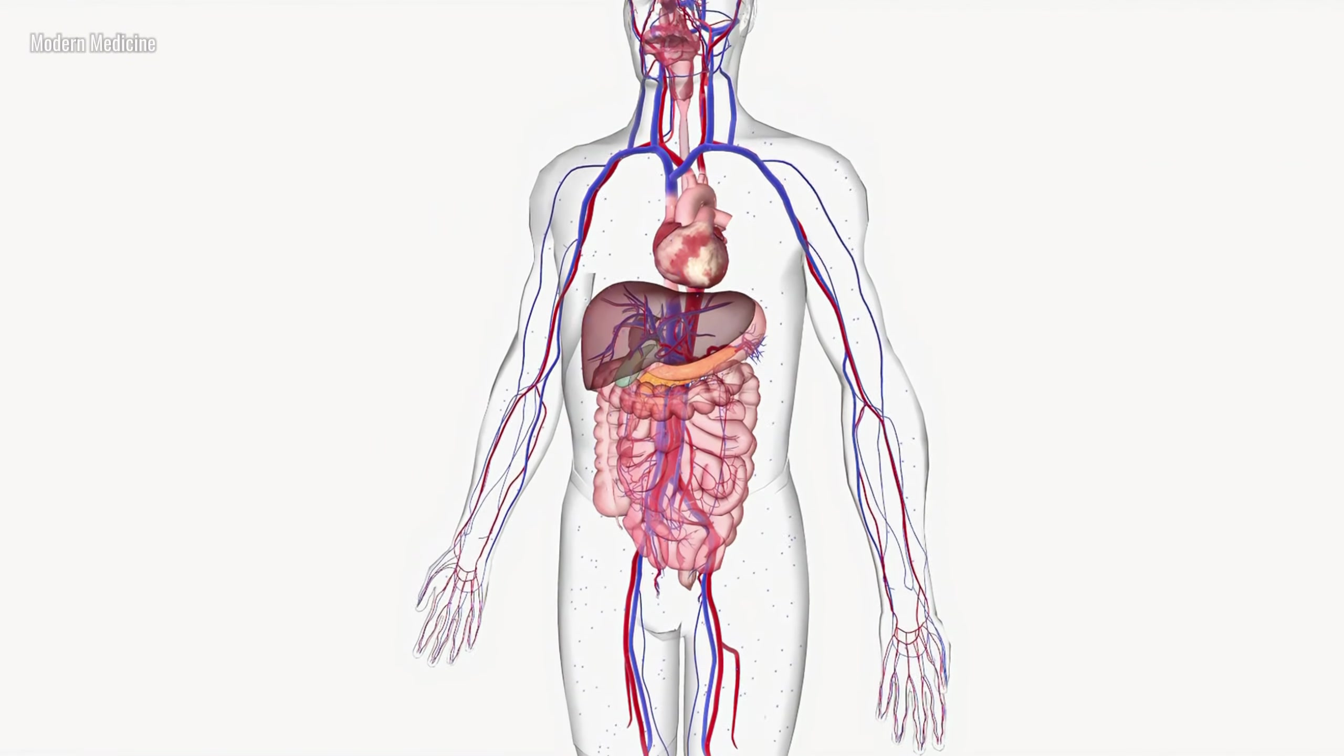When insulin binds to receptors on a cell, it allows glucose to move from the bloodstream into the cell where it's used for energy. But here's where hypoglycemia comes into play: people with diabetes often use insulin as a medication, which sometimes lowers blood sugar too much, causing hypoglycemia.